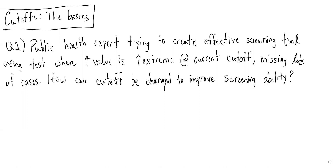In this case, we have a public health expert who is trying to create an effective screening tool using a test where an increased value is a more extreme result. At the current cutoff of the test, the public health expert worries that they're missing lots of cases. How can the cutoff be changed to improve the screening ability?